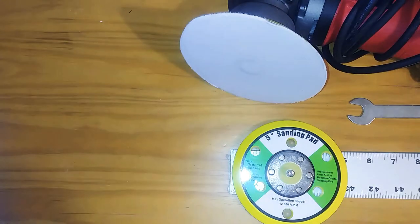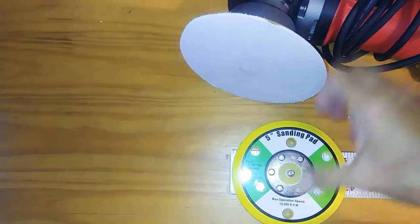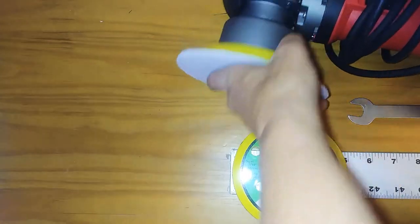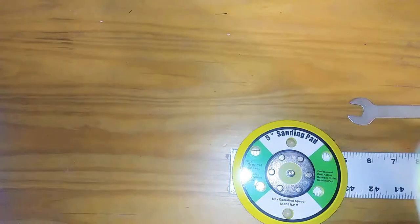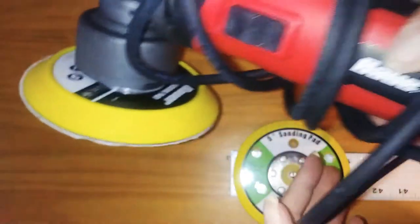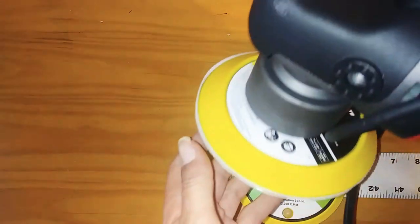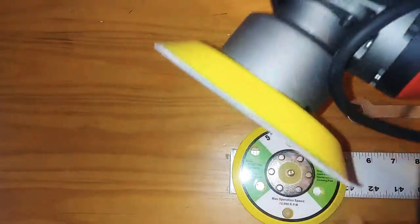Alright, now I'm going to show you how to change out the pad on your Harbor Freight or whatever DA polisher you've got. This one comes with a six-inch backing pad, but the backing pad spins crooked. It goes up and down, up and down.